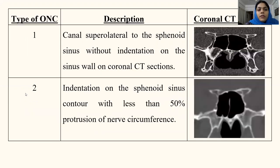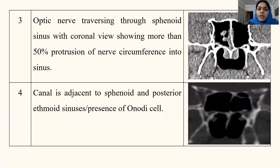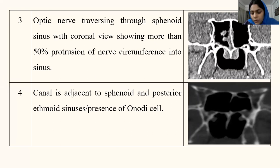Type 1 is where the canal is supralateral to the sphenoid sinus without indentation on the sinus wall. Type 2 is when there is indentation on the sinus wall, which is a curved wall contour, with less than 50% protrusion of the nerve. Type 3 is where the optic nerve is traversing through the sphenoid sinus with more than 50% protrusion of the nerve circumference into the sinus. Type 4 is where the canal is adjacent to the sphenoid and the posterior ethmoid sinus, or the presence of Onodi cell, designated as type 4.